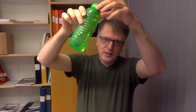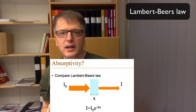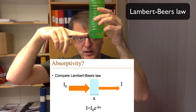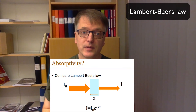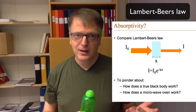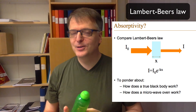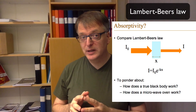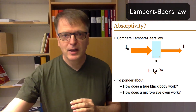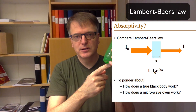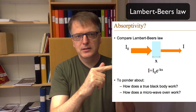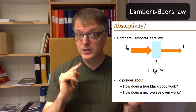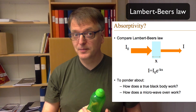How does absorptivity actually work? If you have light going through a water bottle, some passes through and some is absorbed — that's Lambert-Beer's law, which describes how intensity changes as light travels through a medium. It's worth thinking about how a black body really works. Also think about how a microwave oven works: if you put this water bottle in a microwave, where does the heating occur — on the surface or inside? And how is that connected to Lambert-Beer's law? You'll need to answer that for composite task 4.